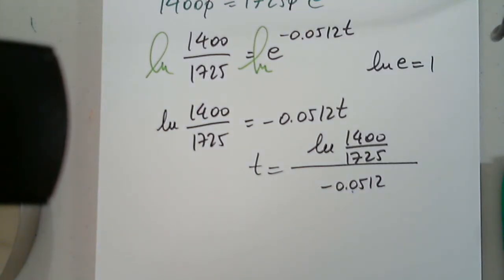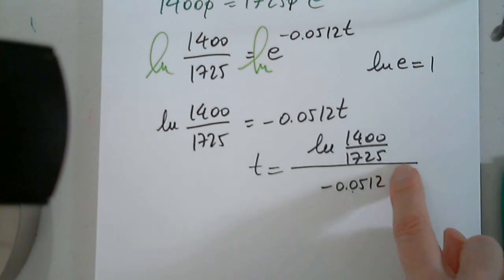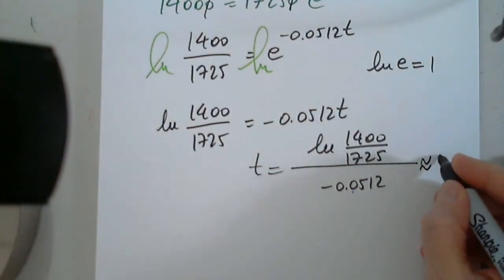So let's plug it in. Remember to put parentheses. And if you want to put the minus in here, you have to have parentheses. If not, you will know that the answer, this will be a negative number, so T has to be positive. But be very careful how you enter it. Natural log 1400 divided by 1725, close, and divide by negative 0.0512. And it's approximately 4.